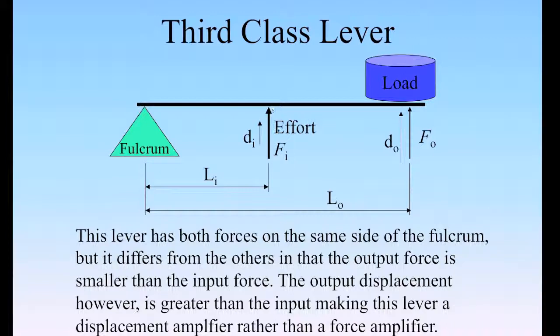And so, as a result, because the d in is small, the f in is going to be large. Because the d out is great, the f out is going to be small.